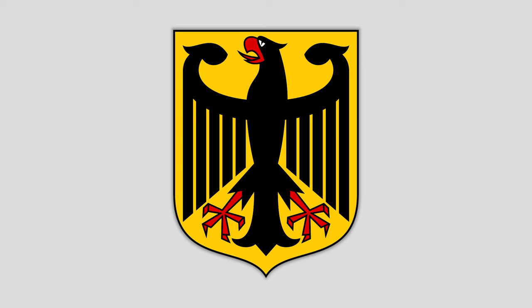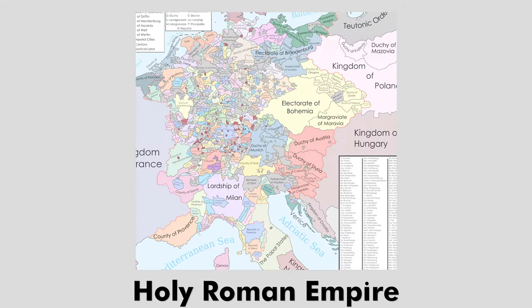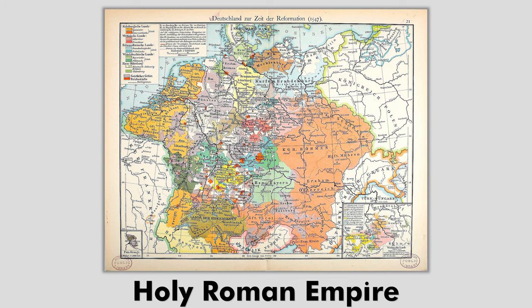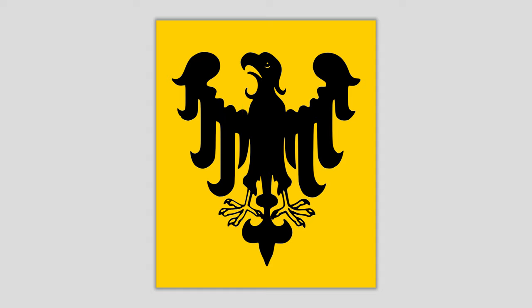Let's talk about the origins of this symbol by looking at the historical flags of Germany. Before Germany was united, the place we call Germany today was part of the Holy Roman Empire. The Holy Roman Empire included hundreds of small German-speaking states. The Holy Roman Empire did not have a national flag, but black and gold were used as colors of the Holy Roman Emperor and featured in the Imperial Banner — a black eagle on a golden background.